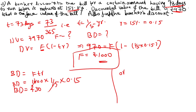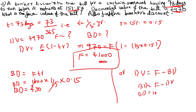Or, we have the formula discounted value equals face value minus banker's discount, so banker's discount equals F minus DV. Banker's discount equals 1000 minus 970 equals rupees 30. To find BD you can use either formula — the answer will be the same.